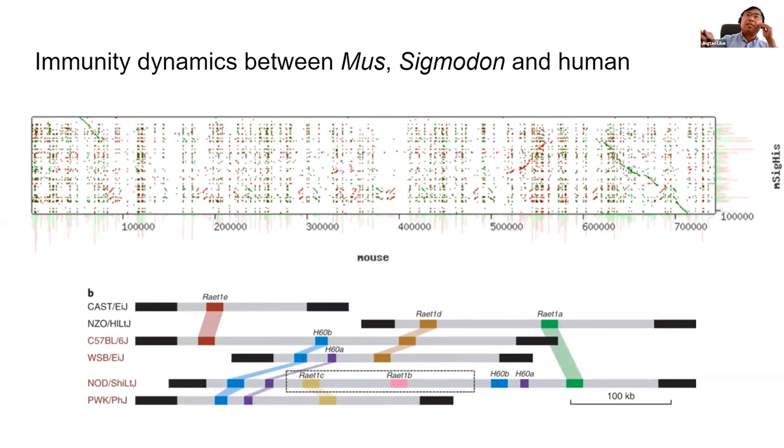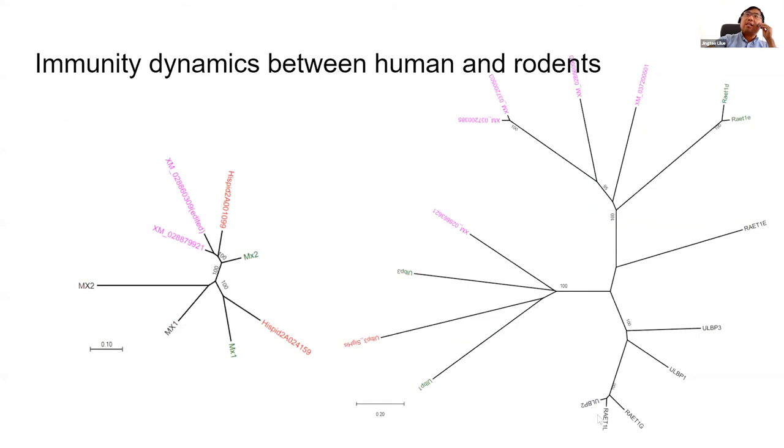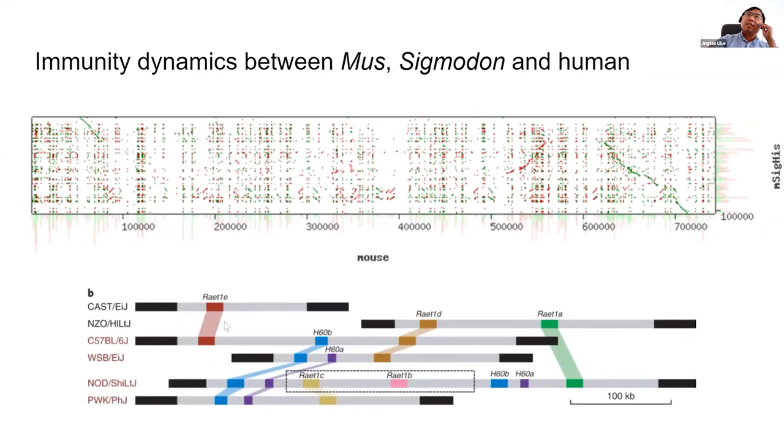Here, I must mention that although we found that the RET loci - cotton rat almost lost all the RET loci which are important in human and mouse virus defense - however, we cannot draw any solid conclusion to say this is the reason for viral susceptibility, because this RET loci itself is highly dynamic even in house mouse. Here, we have sequenced the RET loci in several house mouse inbred strains. You can see the copy number ranges from one in Casted EIJ mouse strain to seven different alleles in the NOD mouse. In this case, we cannot draw any conclusion.